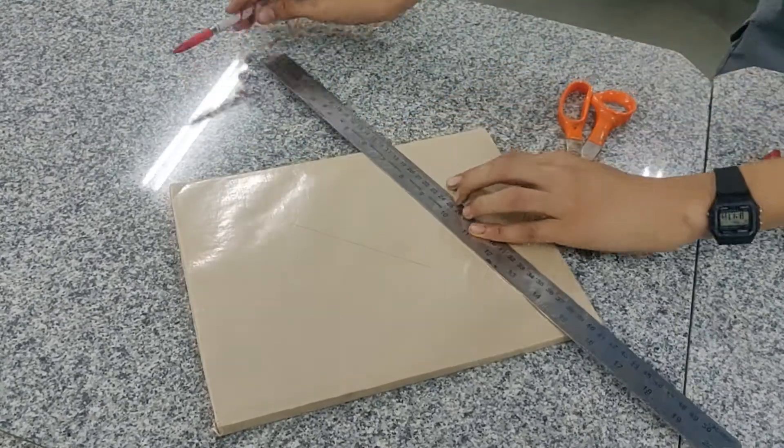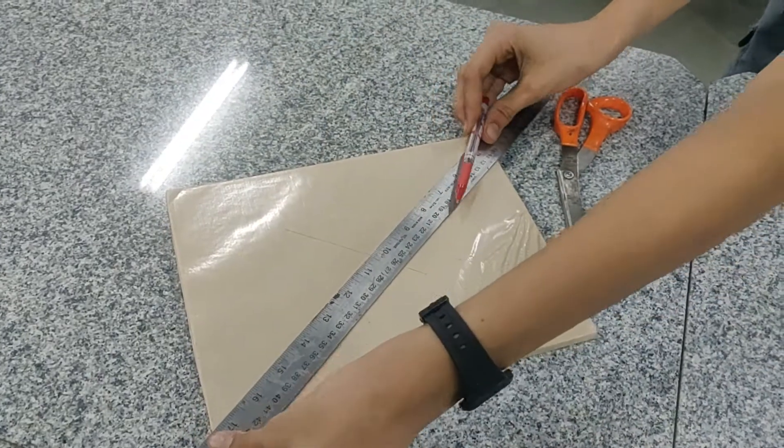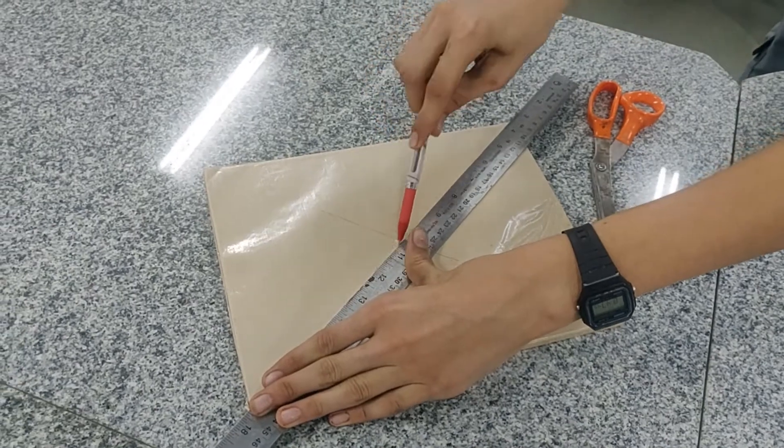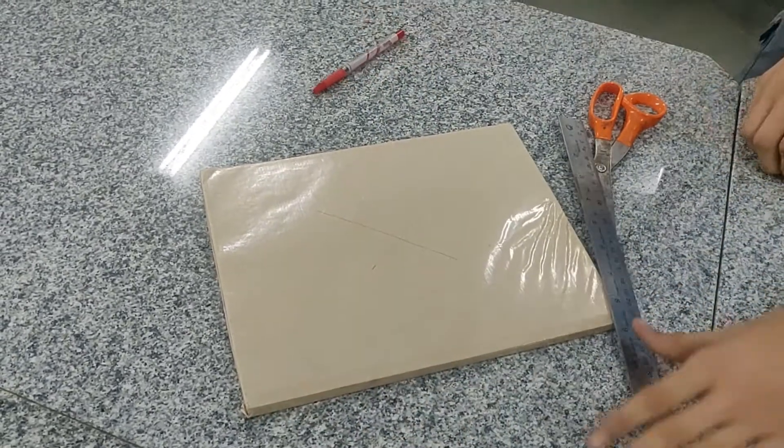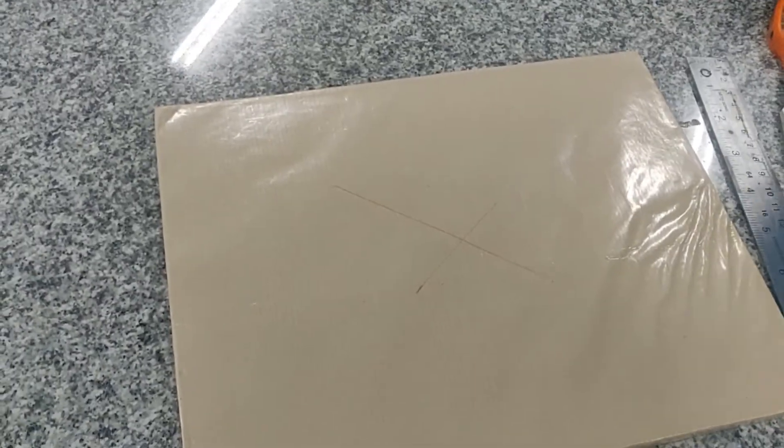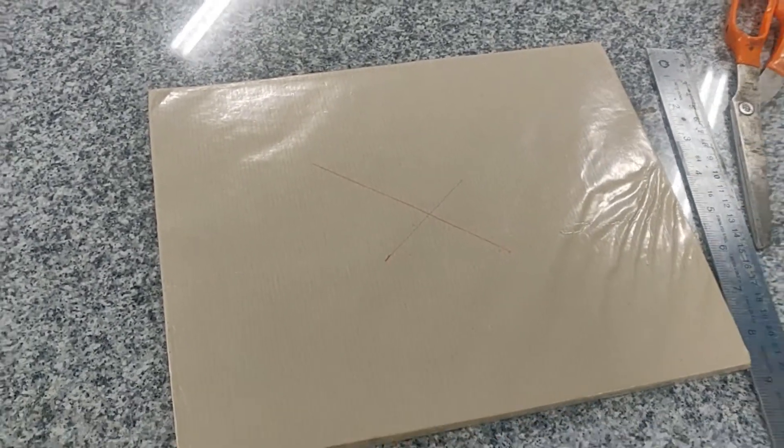Okay, the other diagonal. All right. So at exactly the meeting point of these diagonals is where the center of mass of this record book is.